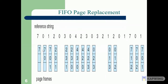Using FIFO, we process the reference string. Initially the frame is empty. For reference 7: page fault occurs — page fault count is 1. For reference 0: 0 is not in the frame, page fault occurs — count is 2. For reference 1: 1 is not in the frame, page fault occurs — count is 3. The frame now holds 7, 0, 1. Next reference is 2.